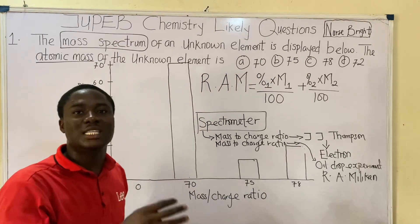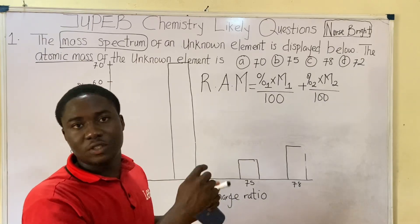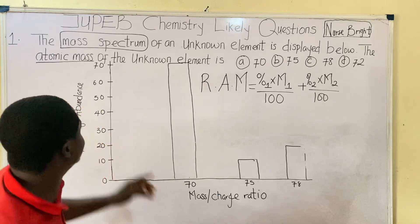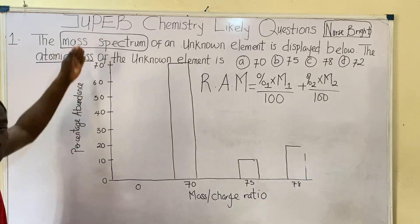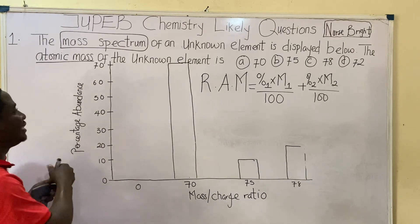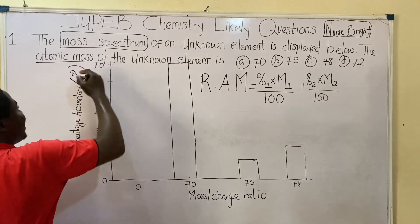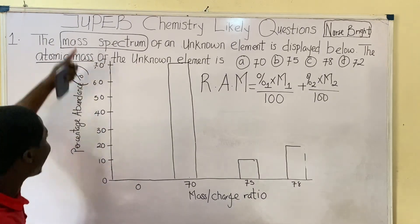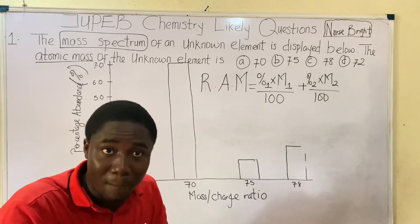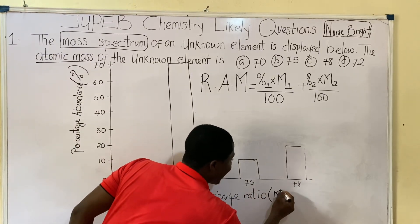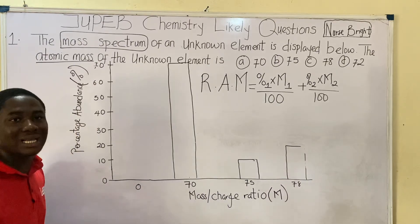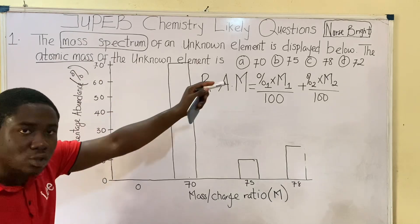Let's solve this question together. Let's check the axes of this particular illustration. The y-axis shows what we call the percentage abundance — symbolized as percent. The x-axis shows what we call the mass-to-charge ratio, which we can also call the mass number, represented as M. Let's bring out the parameters from this illustration to solve the question.